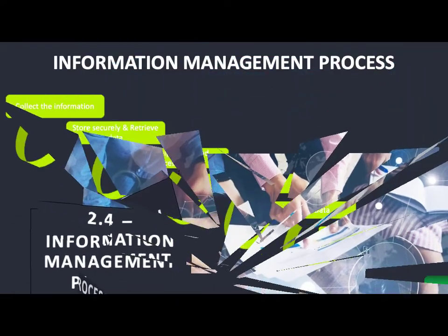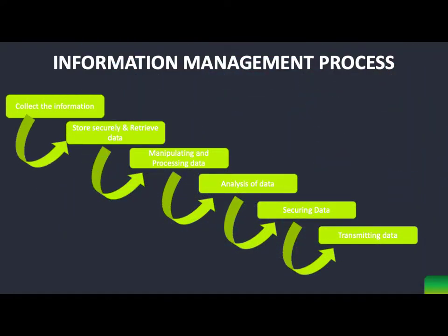The last one is going to be the information management process — how can we manage information in the correct way? This comes down to six steps: collecting the information, storing securely and retrieving the data, manipulating and processing the data, analysis of that data, securing, and transmitting.